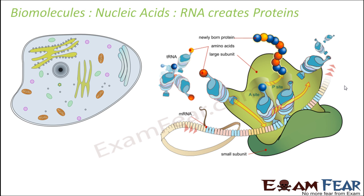Now let us see how and where RNA creates proteins. We have already discussed a lesson on cell where we spoke about ribosomes being the cell organelles involved in protein synthesis. This entire structure shown here is the structure of a ribosome. There is a 70S ribosome in prokaryotes and an 80S ribosome in eukaryotes. It is made up of two units — one small and one large. The smaller unit is shown in dark green and the larger unit is the bigger structure.